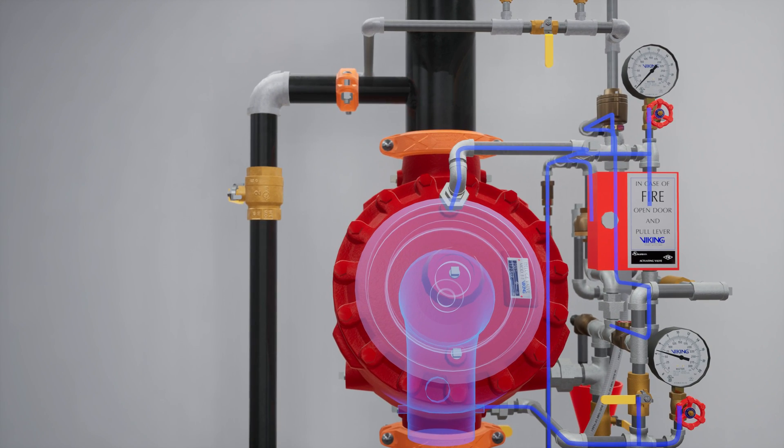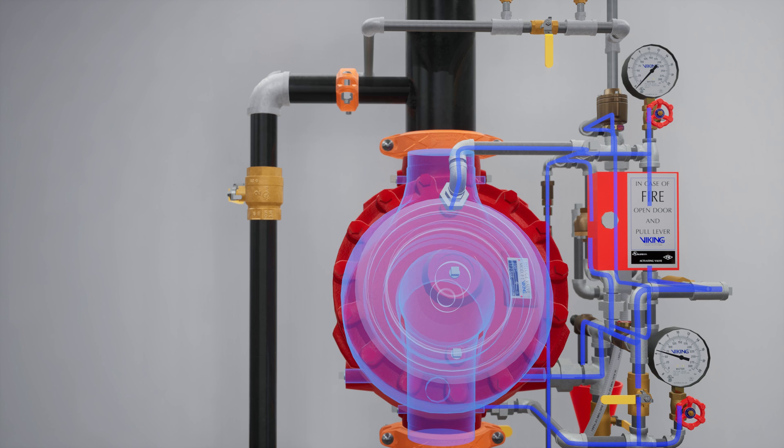Once water pressure is released from the priming chamber, the clapper is forced open by the supply water pressure from the inlet chamber, filling the valve body and connected trim with water.